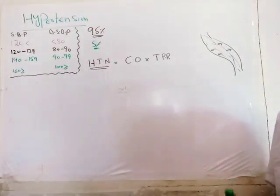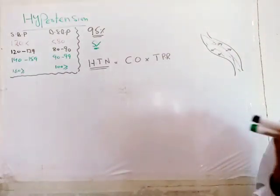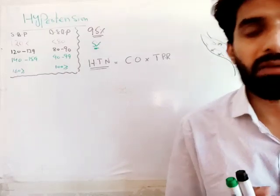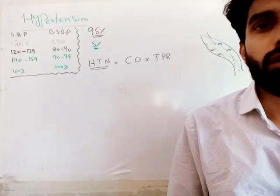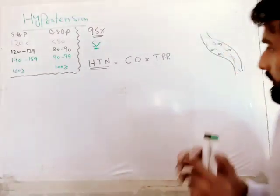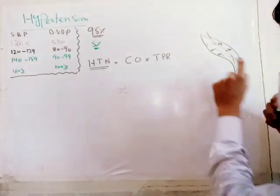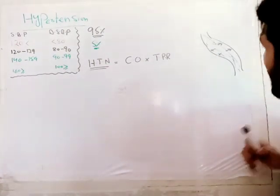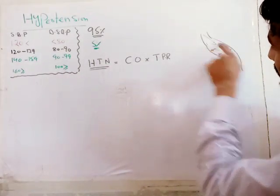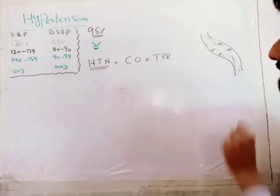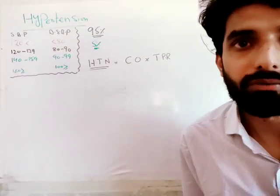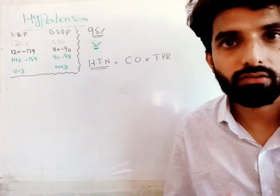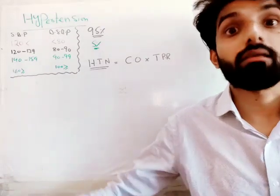Before moving toward the pathophysiology, let's define hypertension. The pressure exerted by the blood against the blood vessel is called blood pressure. When this pressure is high, it will be called as hypertension.